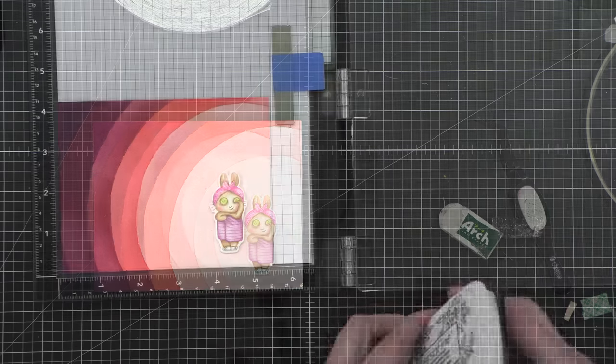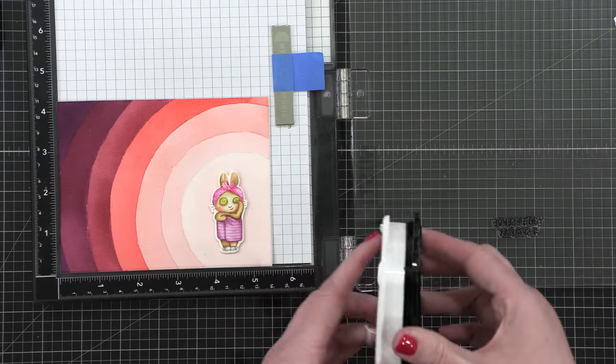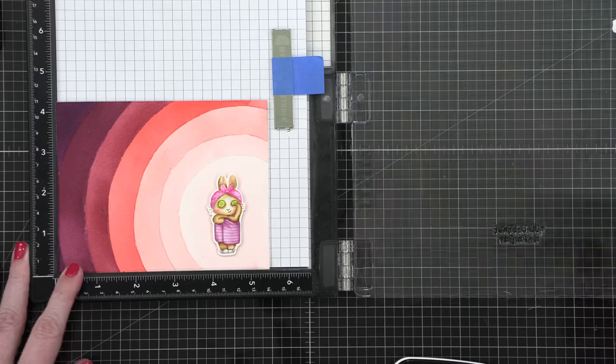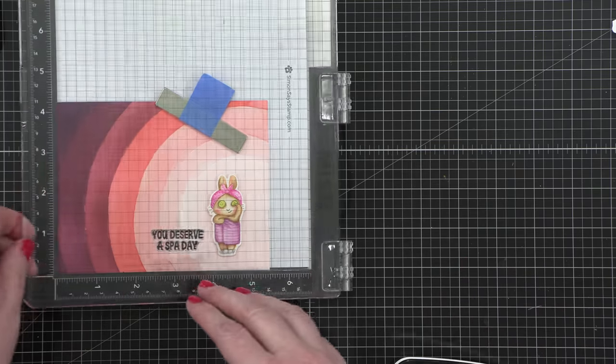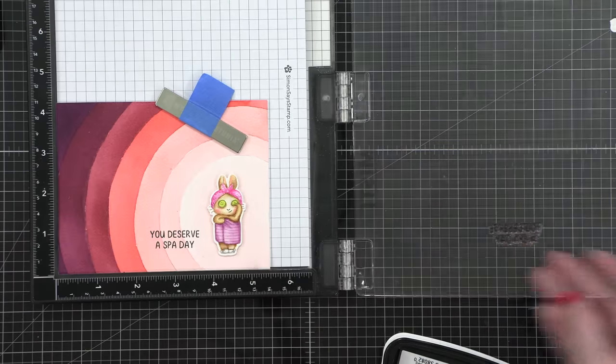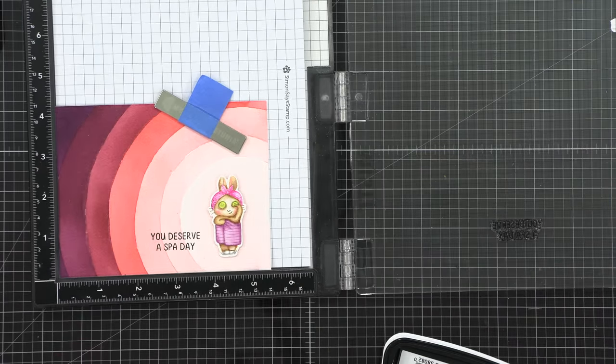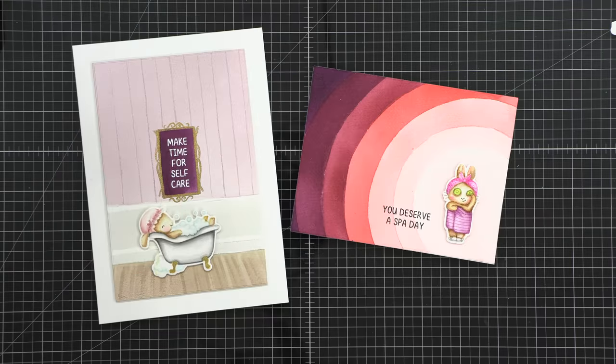And then to finish off this card, I just used some Versafine Onyx Black Ink to stamp the greeting off to the left of the bunny. This is a very simple card. It's not really even a scene per se. It just has a nice pattern on the background that really brings your eye to the focal point of the bunny.